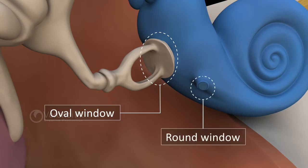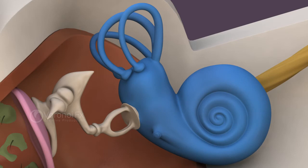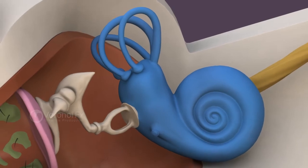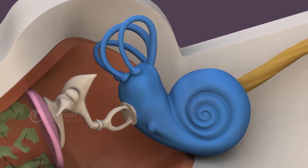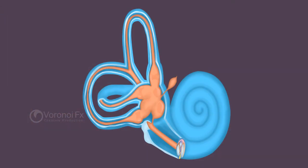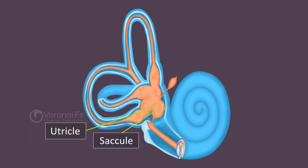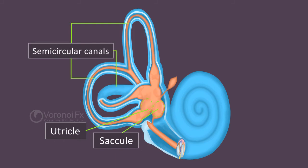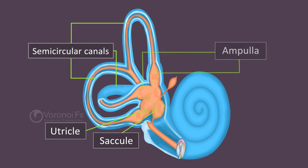The round window is closed off from the middle ear by the round window membrane. The vestibule is like a chamber that lies between the cochlea and the semicircular canals. It has structures called the utricle and the saccule that contain sensory cells for linear acceleration. There are three semicircular canals within each ear — the lateral, superior, and posterior semicircular canals — which are responsible for balance and equilibrium of the body. One end of each canal is slightly dilated to form a round-like structure called the ampulla.